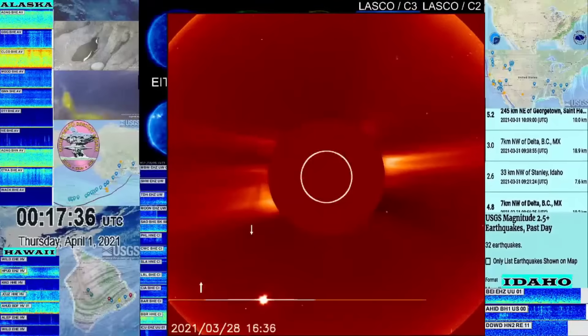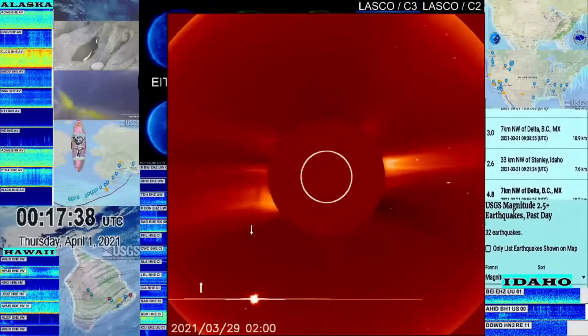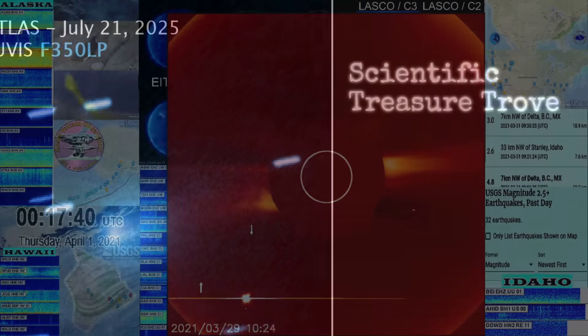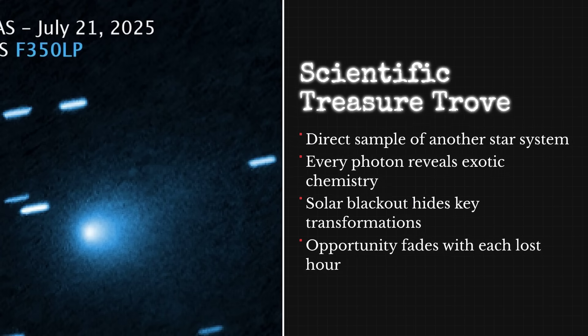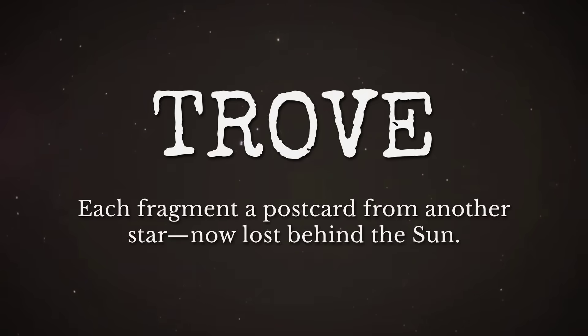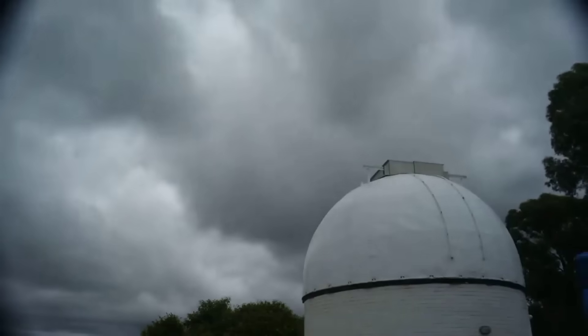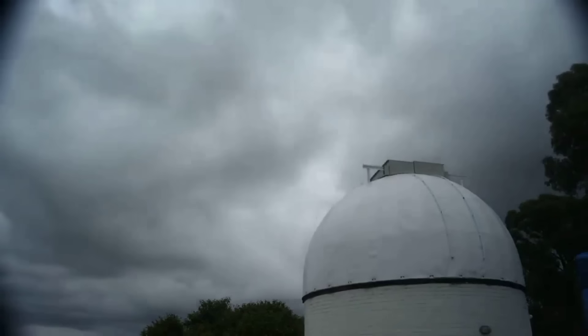The perihelion passage is critical because that's when solar heating is at maximum. If 3I/Atlas is going to undergo any dramatic changes, increased outgassing, fragmentation, or unexpected activity, it will happen now. And, frustratingly, we can't watch it happen in real time.